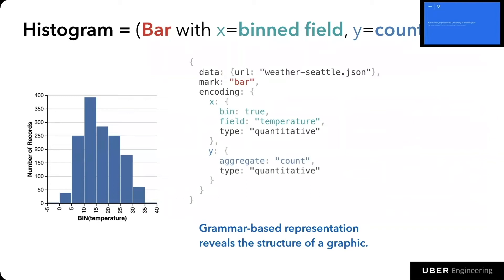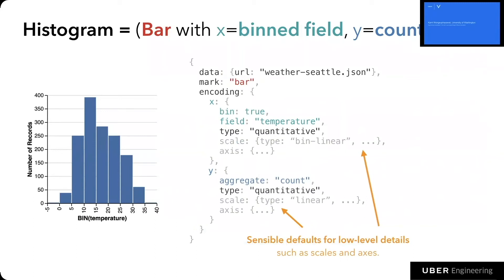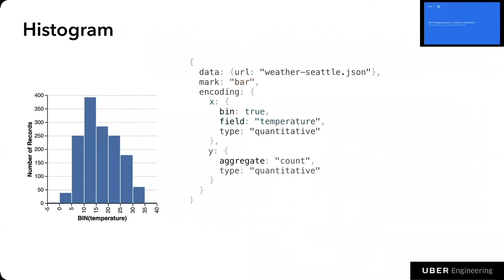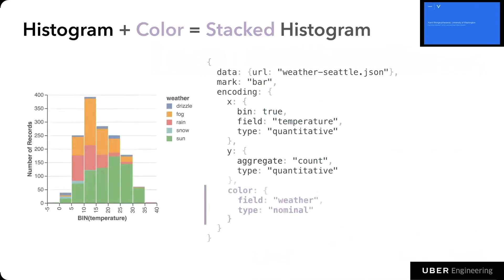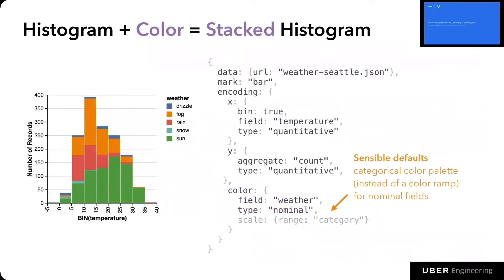This specification is much shorter than what you would do in D3. That's partly because under the hood, VegaLite automatically generates sensible defaults for low-level details like scale and axis for the x and y encodings. With grammar-based building blocks, we can also add more encodings to the chart. For example, if we encode weather type with color, we get a stacked histogram. VegaLite automatically uses a categorical color palette to encode weather type, rather than a color ramp, which is better for quantitative fields.